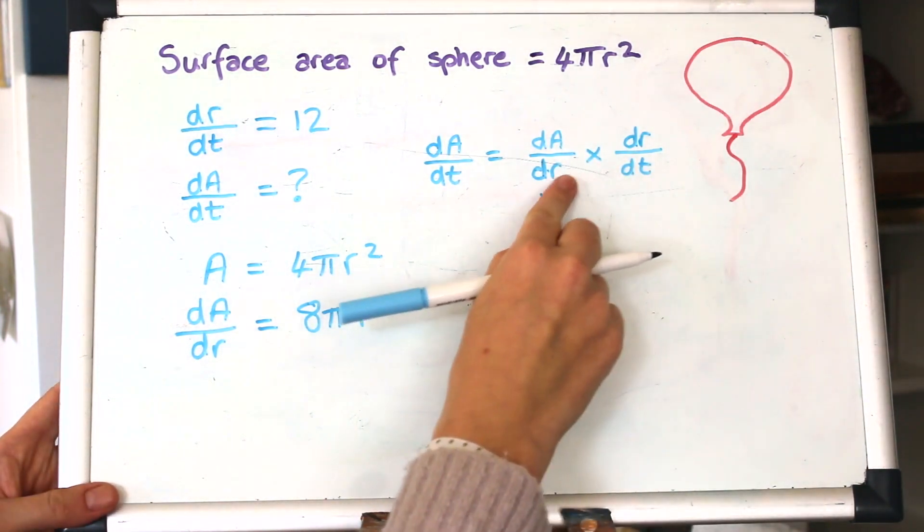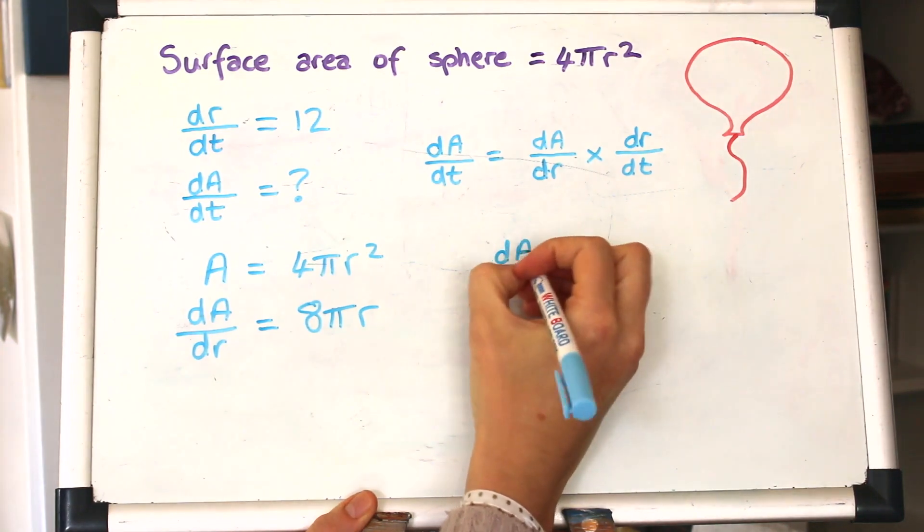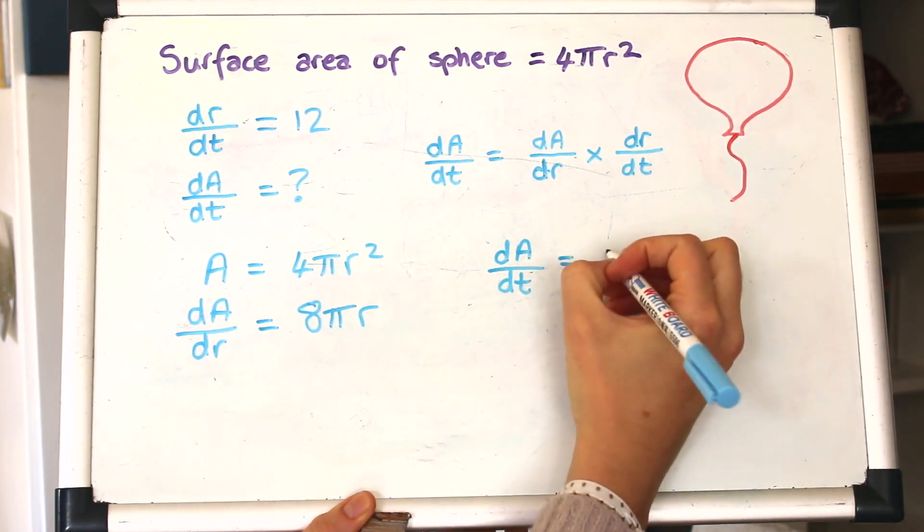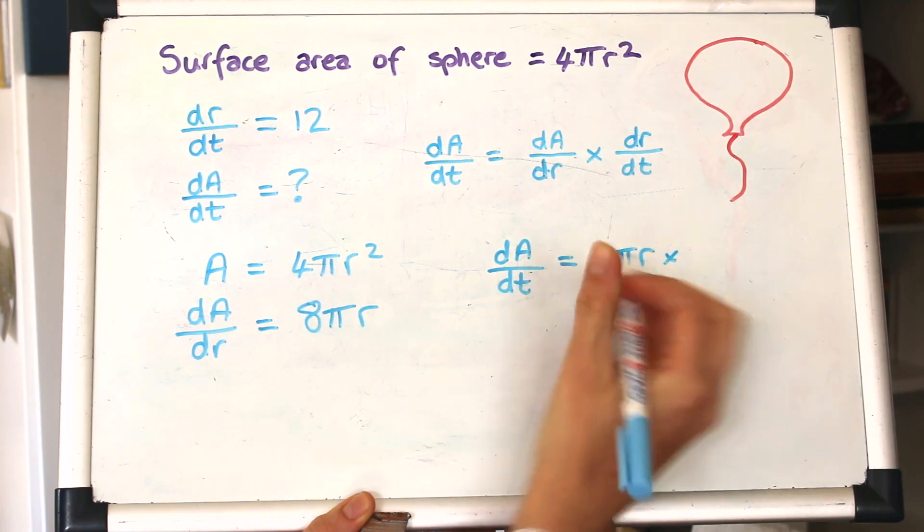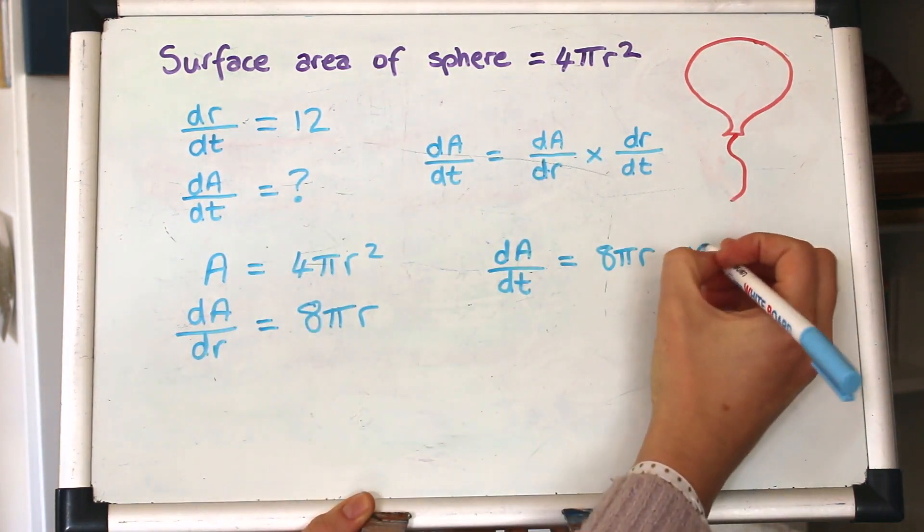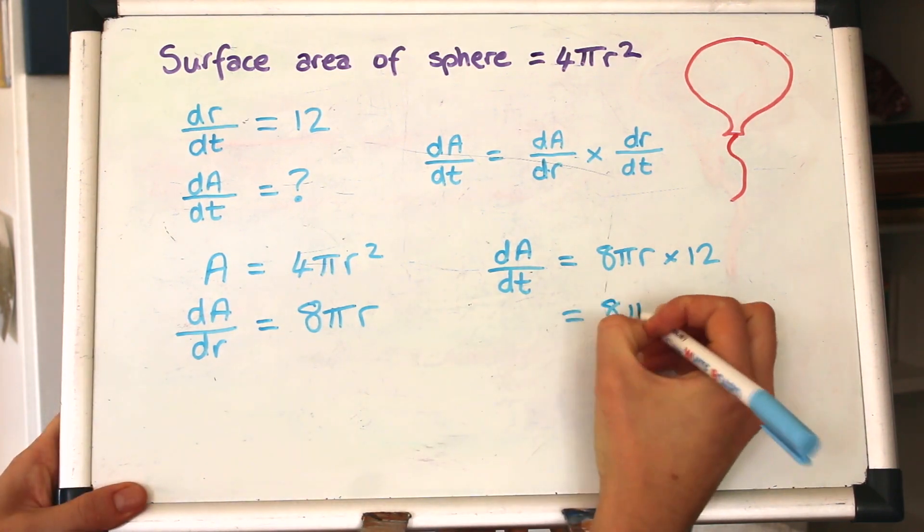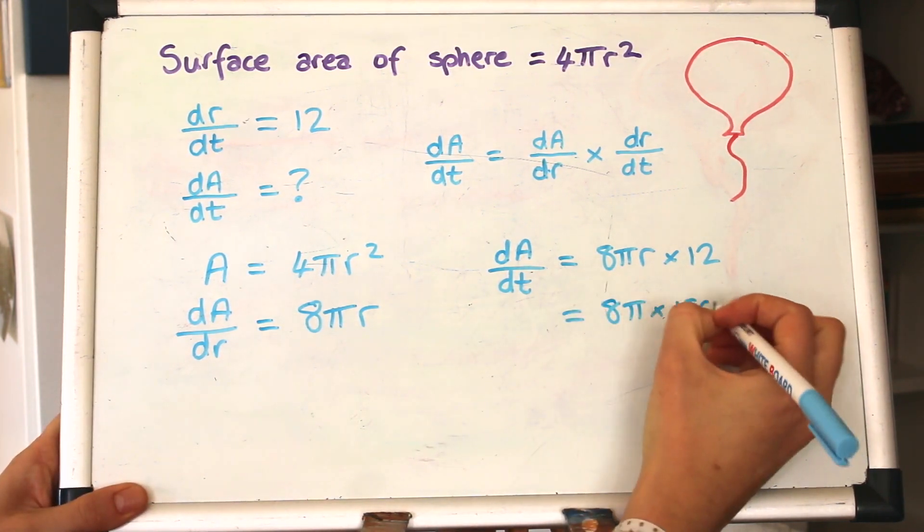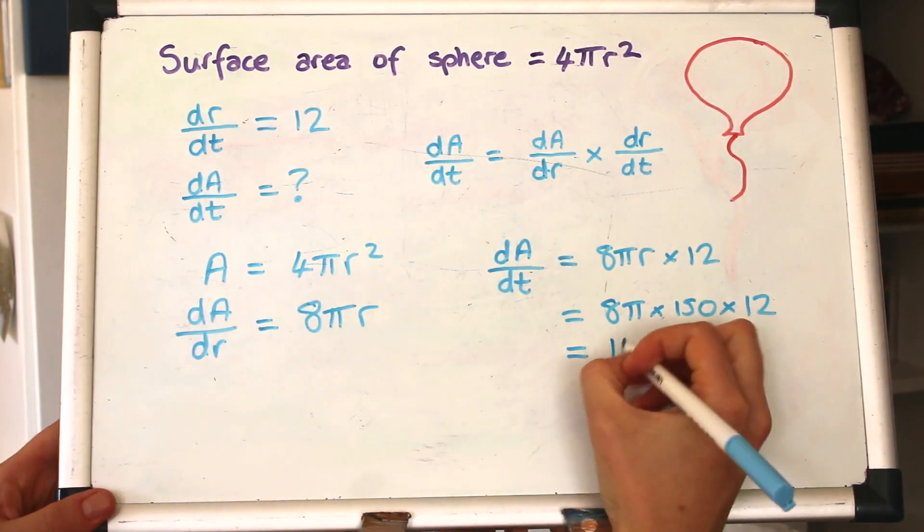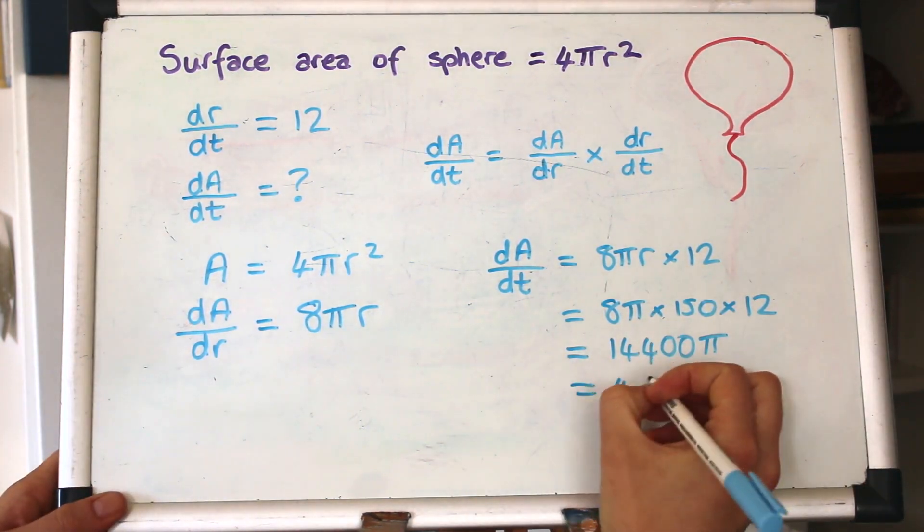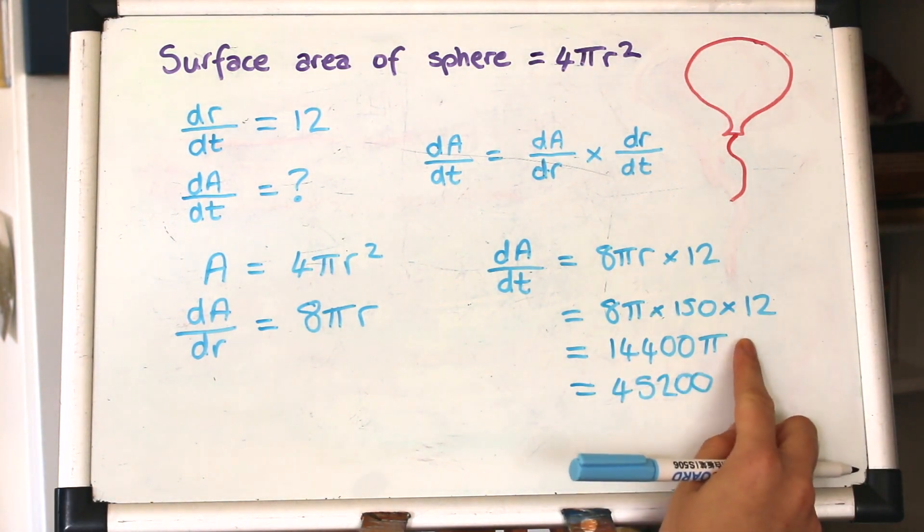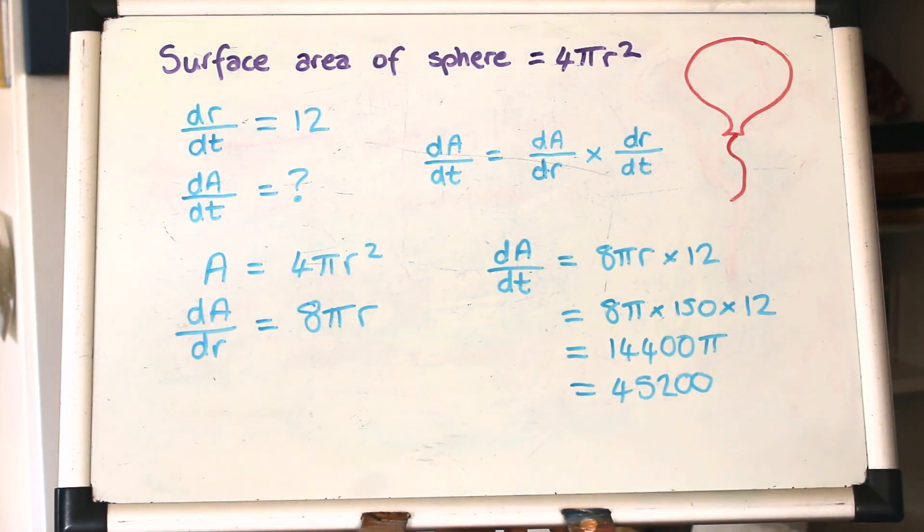So we're looking for dA by dt, and that will be 8 pi r times by dr by dt, which is 12, and the question also tells us the radius at the time that they want it. So the radius is 150, so putting that into the calculator, we can get an answer. So you can either leave that answer in terms of pi, or just as a number. Great, hope that made sense, let's have a look at another one.